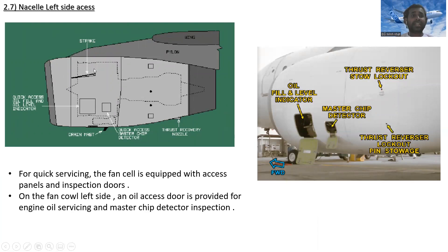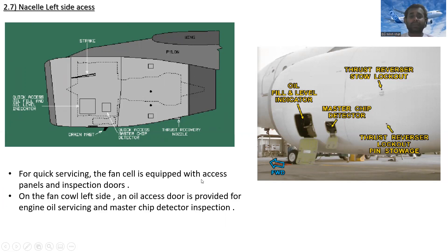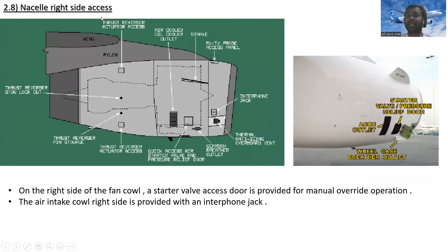On the nacelle left side access, you can see the quick-access master chip detector, the drain mast, the quick-access oil fill and oil level indicator, and the thrust reverser nozzle. In the actual view, the oil fill and level indicator, the access door, the master chip indicator, and the thrust reverser lockout pin storage are visible. An oil access door is provided on the fan cowl left side for engine oil servicing and master chip detector inspection.